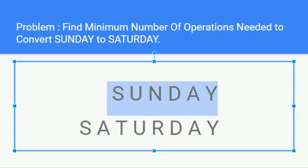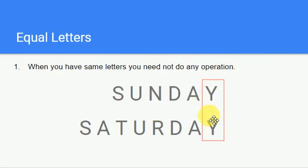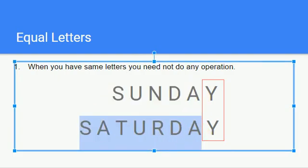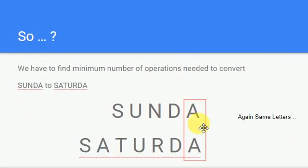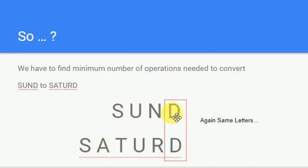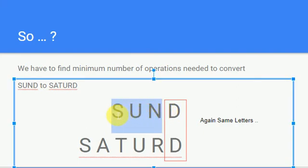When the two letters are the same, you need not convert anything. Since both are equal, we can ignore those two letters and find the minimum number of operations for the remaining strings. Ignoring matching characters step by step, we end up needing to convert 'SUN' to 'SATUR'.